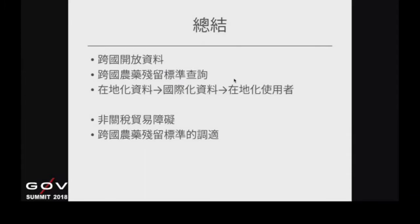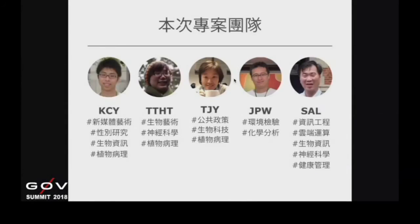總結一下，我們在處理跨國開放資料時，會發現語言問題甚至資料品質的問題。我們實際試著把跨國農藥殘留標準的資料做了整理並可以查詢。我們的議題牽扯到國際面，加上國際化資料之後，最後還是要回到使用者——可能是台灣的農民或其他國家的農民——做系統的在地化設計。農藥殘留標準在政府手上，其實也是一種非關稅的貿易障礙，可以阻止其他國家的產品銷入，也可阻礙我們銷出，需要政府進行跨國農藥殘留標準的調整。